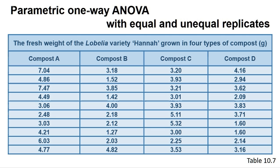If you get a significant result from the ANOVA, you may then wish to work out which samples are significantly different from each other. We cannot simply do a t-test for each sample pair combination as this increases the likelihood of Type 1 errors. Instead, there are many other tests collectively called post-hoc tests that can be carried out. In many cases we prefer to use a test called the Tukey test, although other tests such as the Games-Howell test will be suggested in the screencast if required.